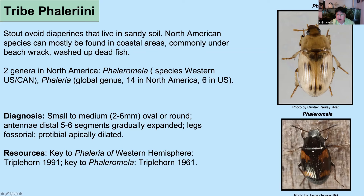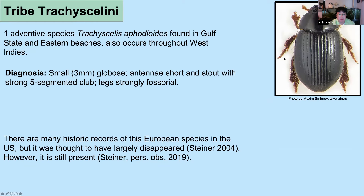The largest tribe of the Phalyrine Diaperines is the Phalyriinae — stout and ovoid beetles that live in sandy soils, most species found on beaches under beach wrack, washed-up dead fish, and similar habitat, but there's also a species found in riverine sandbars. This is Phalyriomella variegatum from Oregon. Their main character is very fossorial forelegs and a very weakly formed antennal club. The genus Phalyria occurs on beaches throughout the world; there are 14 species in North America, six in the US, and there's a good key to the Western Hemisphere species.